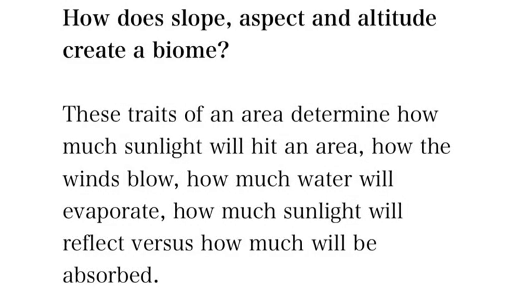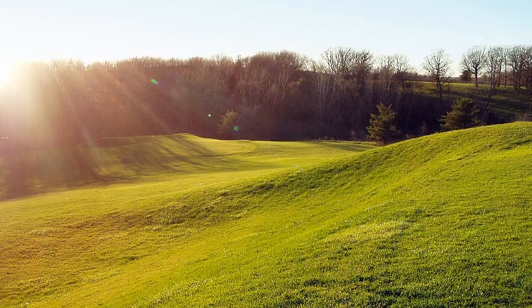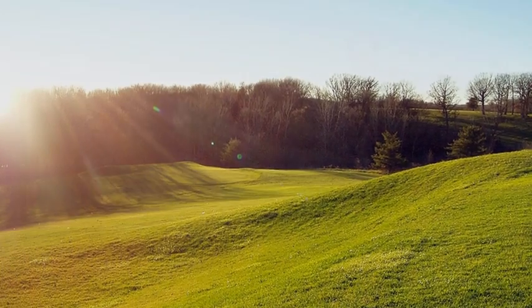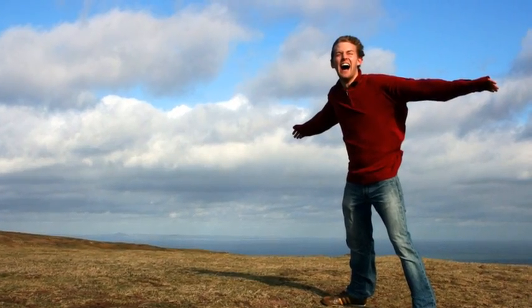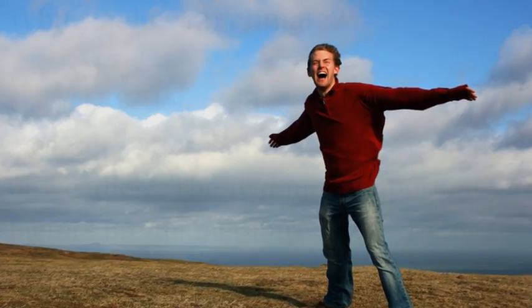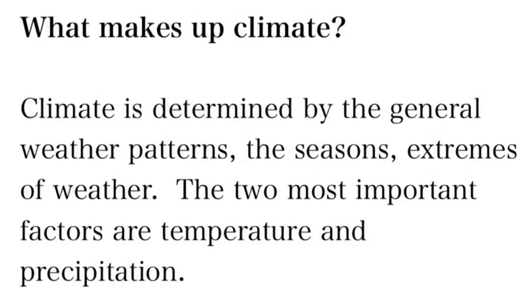Slope is how gradual or steep it is. Aspect is kind of the sun on it, and altitude is how high from sea level. These things will determine how the wind blows, how much water evaporates, how much sunlight will reflect. So the aspect of this slope means it gets a certain amount of sunlight at a certain time of day. This hillside's aspect is that it's windy, and it prevents large plant growth.